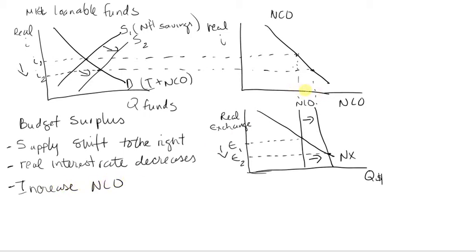Net capital outflow increases from point A to point B, which means capital will flow out of the country. A lower interest rate creates an incentive for domestic residents to invest in foreign assets, so it's going to increase NCO. That increase in net capital outflow is going to shift the supply in the foreign currency exchange market.